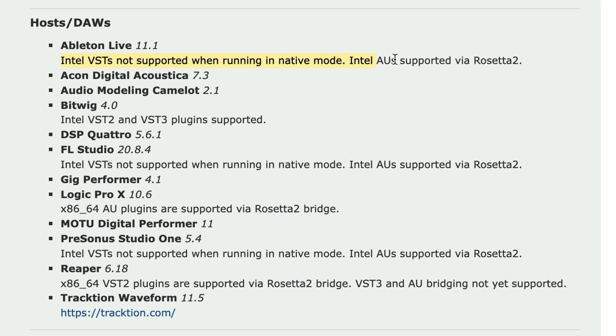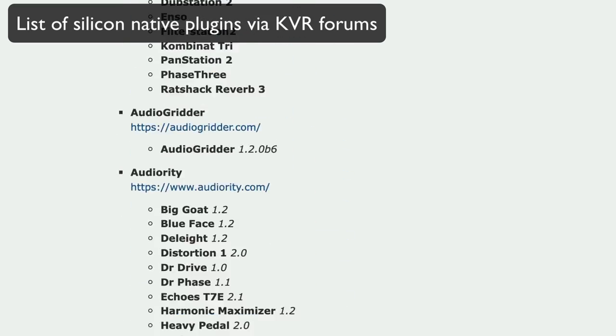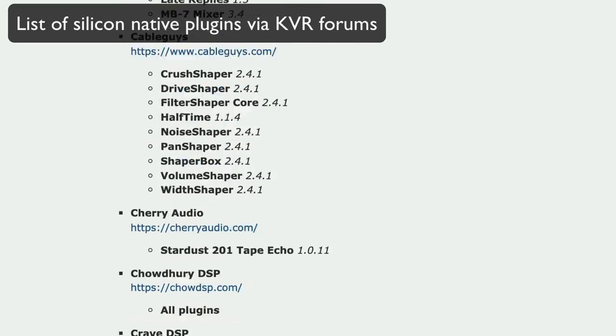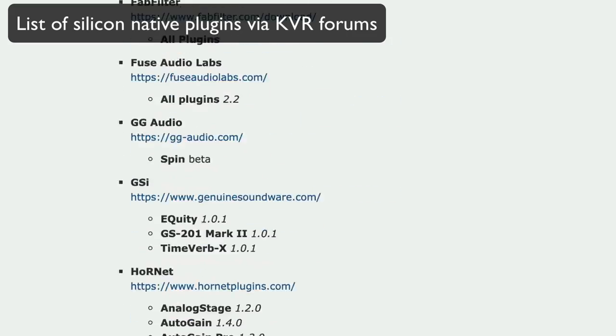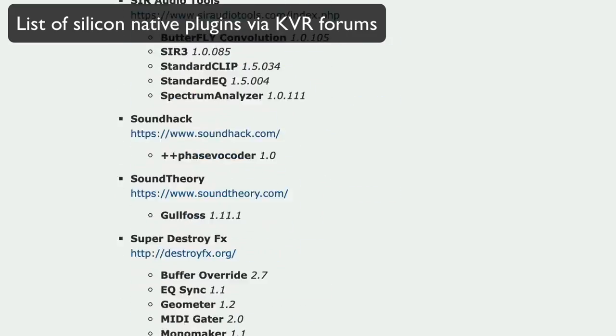So why did Ableton take this hybrid approach? Because essentially it allows users to take advantage of silicon technology and save CPU processing while still remaining compatible with legacy Intel audio unit plugins. Unfortunately, some developers are seriously slacking behind in releasing silicon native versions of their software, and we as producers don't have time to wait on them. So if a developer hasn't released a silicon native version of your favorite plugin yet, put the pressure on them via forums and emails.